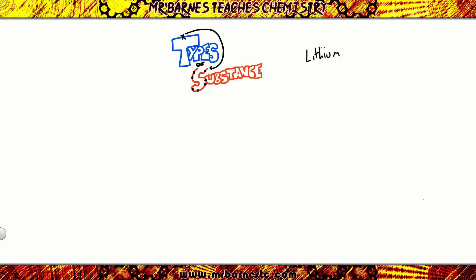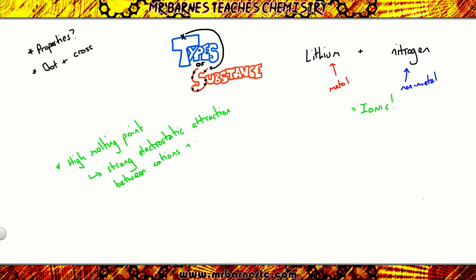We're going to start off with lithium reacting with nitrogen. What I want to be able to do is describe and explain the properties and draw the dot and cross diagram for this compound. Remember the first step: what type of elements do we have? Lithium is a metal, nitrogen is a non-metal, therefore it must be ionic. Straight away I can say we have a high melting point. That's because of the strong electrostatic attraction between the cations and the anions, and lots of energy is needed to break the bonds.